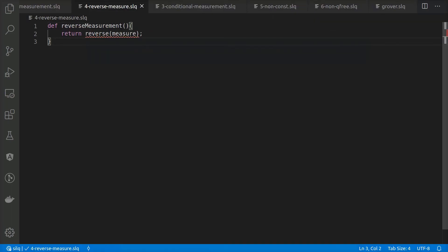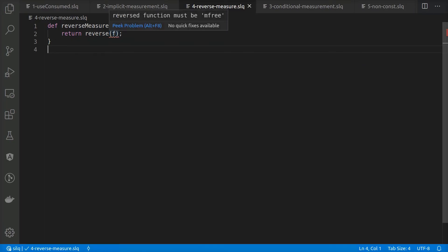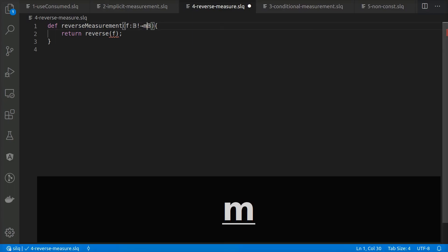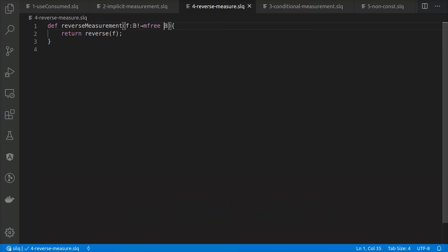A similar issue occurs in this example, where we try to reverse a measurement, which is physically impossible. We obtain the same type of error if we try to reverse an arbitrary function f, which may in general include a measurement. However, we can fix this error by annotating f as m-free, meaning that it cannot contain a measurement.